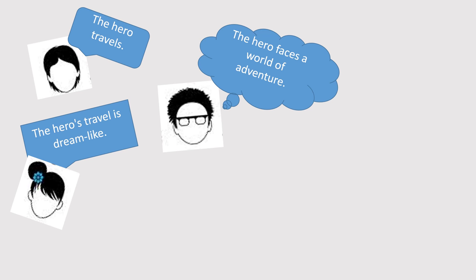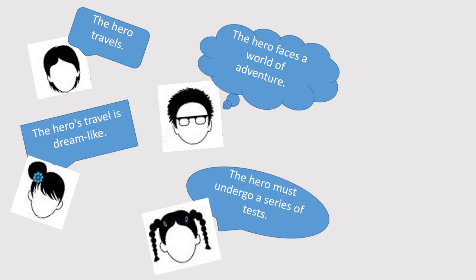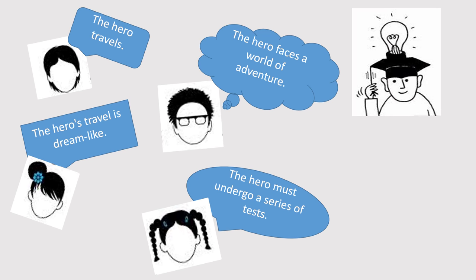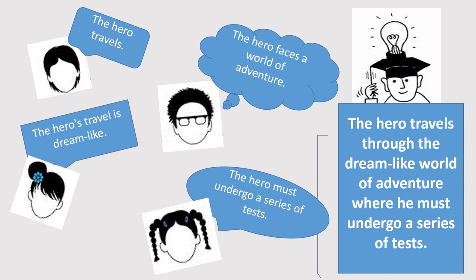Leon pushed it further by declaring, 'the hero must undergo a series of tests.' But then Isagani, having invested much in his vocabulary and sentence structure through voracious reading, thought he could combine all ideas in a single sentence. He wrote: 'The hero travels through the dreamlike world of adventure where he must undergo a series of tests.' Notice the improvement?